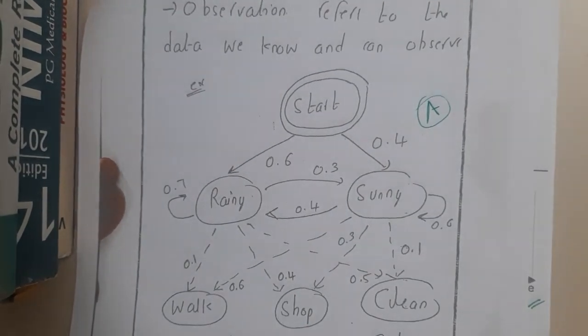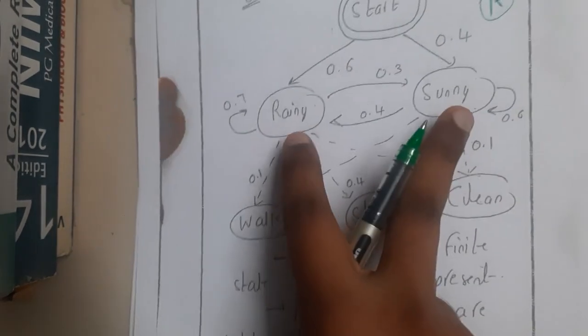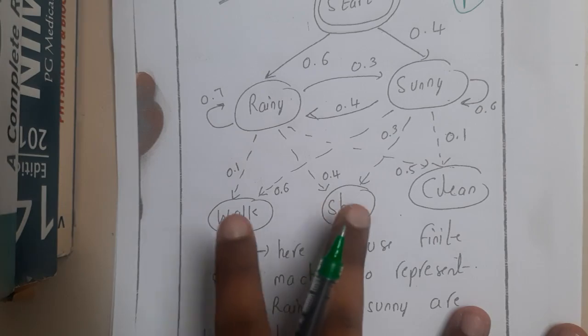Finite state automata. Here rainy and sunny are the hidden layers, so basically these are the hidden layers. Assume that I told I went to walking on the first day, and second I went to shopping, and the third day I cleaned my whole house.